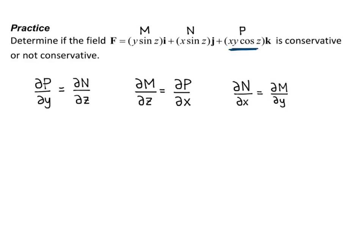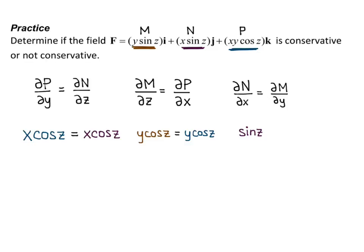Let's start with p = xy cosine of z. If I take the derivative of that with respect to y, I get x cosine z. N is x sine z; derivative with respect to z is going to be x cosine z — so those are equal. Second criteria: m is y sine z; derivative of that with respect to z is y cosine z. P is xy cosine z; derivative with respect to x is y cosine z — so those are equal. Third criteria: n is x sine z; derivative with respect to x is just sine z. m is y sine z; derivative with respect to y is just sine z — so those are equal.